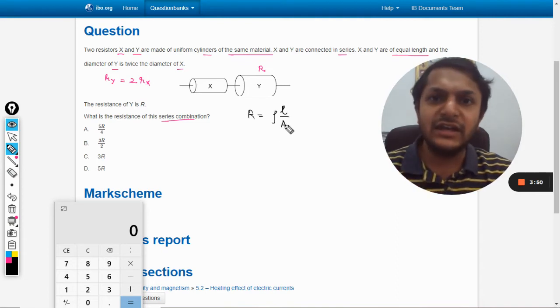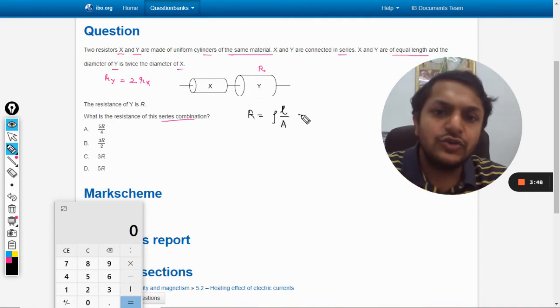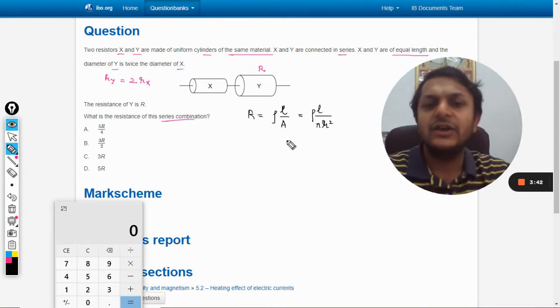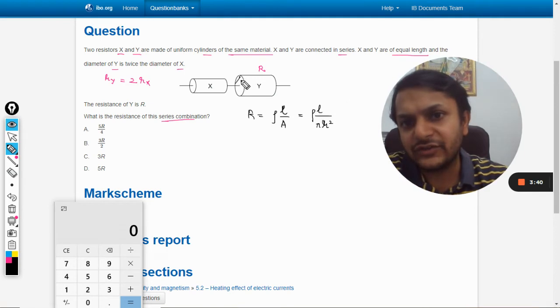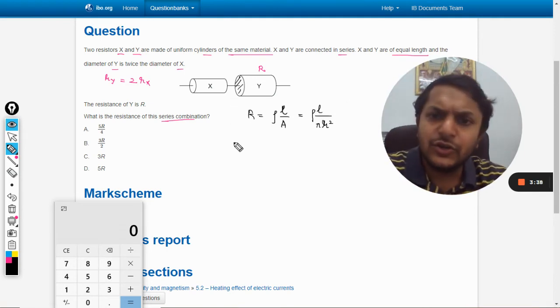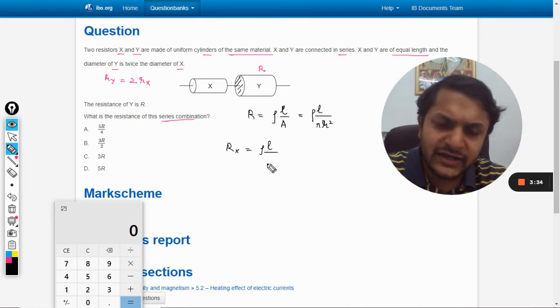The area can be written as pi r squared, where r is the radius of the cross-section. So Rx equals resistivity times l divided by pi times rx squared. And Ry can be taken as the same formula.